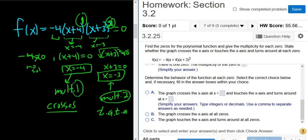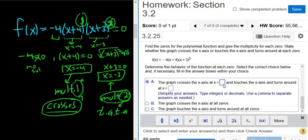So at negative 4, because it's odd, because 1 is odd, it's going to cross. At negative 3, it's even, so it touches and turns around. So let's see. The graph crosses the x-axis at negative 4, right? Because that's the zero. And touches the x-axis and turns around at negative 3. And the reason is because 2 is even, so it touches and turns around at negative 3. Let's try that.